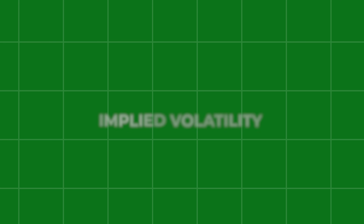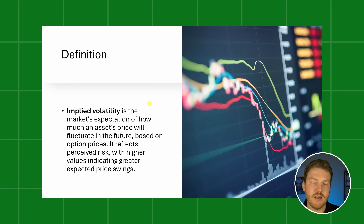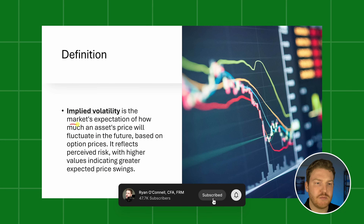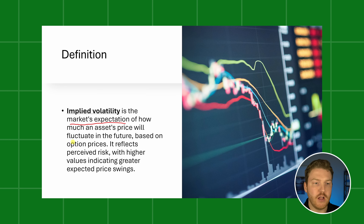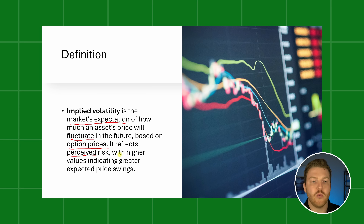Let's start off by talking about what many would consider to be a confusing topic: implied volatility. It's not that confusing if we start with a basic definition. We can define implied volatility as the market's expectation of how much an asset's price will fluctuate in the future, based on option prices. It reflects perceived risk, with higher values indicating greater expected price swings.